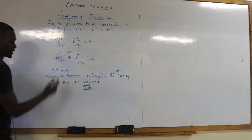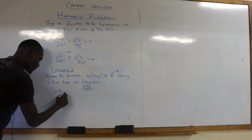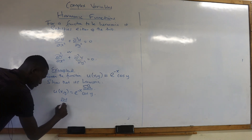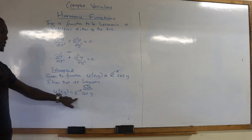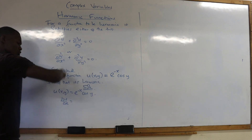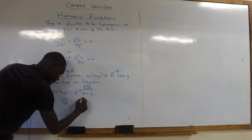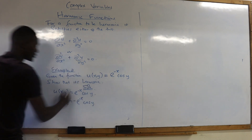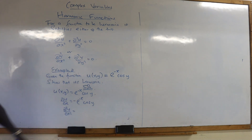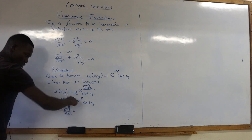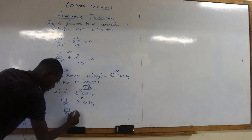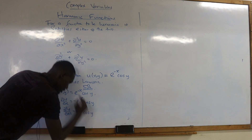Our u(x,y) is given by e^(−x) cosine of y. Differentiate with respect to x — you only differentiate the part that has an x variable. Our constant here is negative 1, so you drop the negative: du/dx = negative e^(−x) cos(y). Then d²u/dx²: differentiate again. Dropping another negative makes this positive, so you shall have e^(−x) cosine of y.